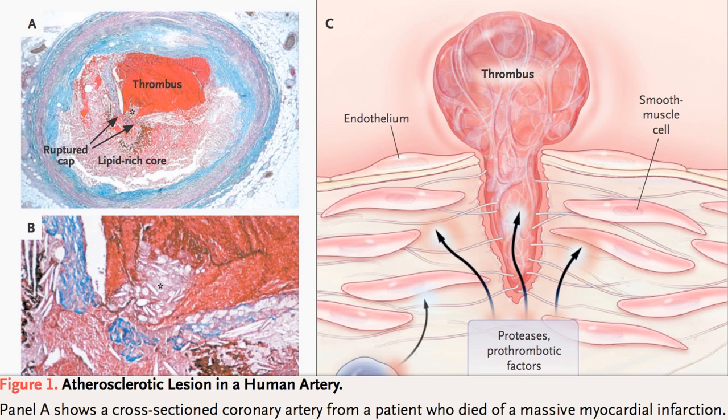Blood rushes into the hole and says, "Hey, we know how to plug holes," and forms a blood clot, also known as a thrombus, that can close off the whole rest of the artery. And then we have the opportunity to visualize a cross-section like this of an artery on autopsy — because you're dead. Fine.